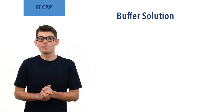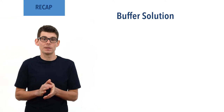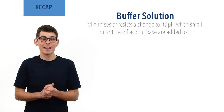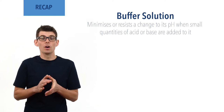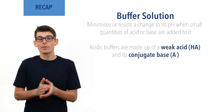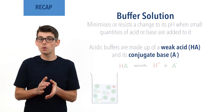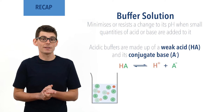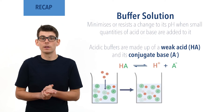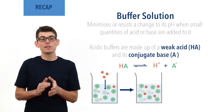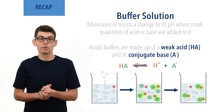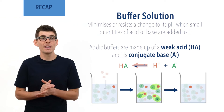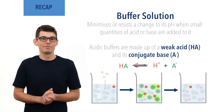A buffer solution is able to minimize changes to its pH when small amounts of acid or base are added to it. Acidic buffer solutions are made up of a mixture of a weak acid and its conjugate base. An equilibrium system is formed between molecules of the weak acid, conjugate base ions, and H⁺ ions. If more H⁺ ions or a base is added to the solution, the position of equilibrium will move to try and keep the H⁺ ion concentration constant, and this means the pH changes only slightly. Recap done? Let's go!